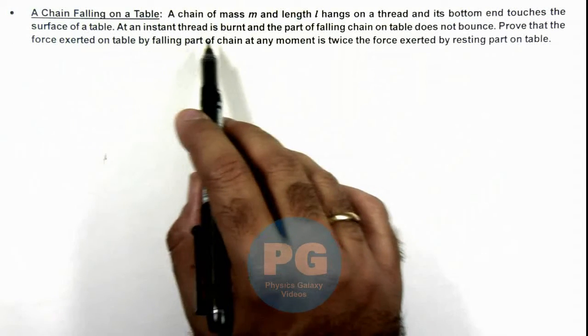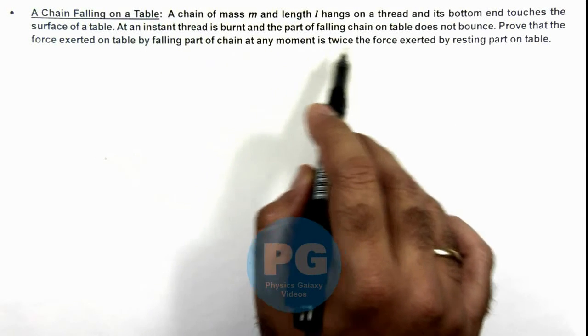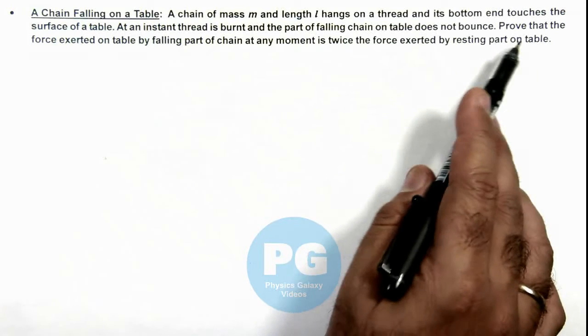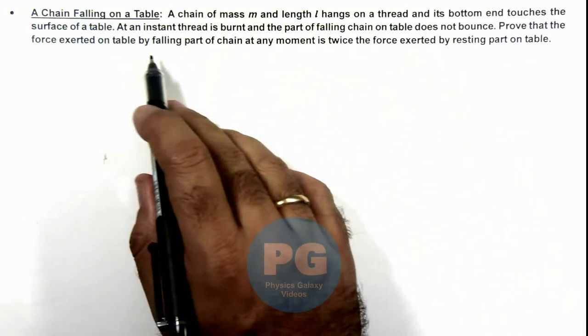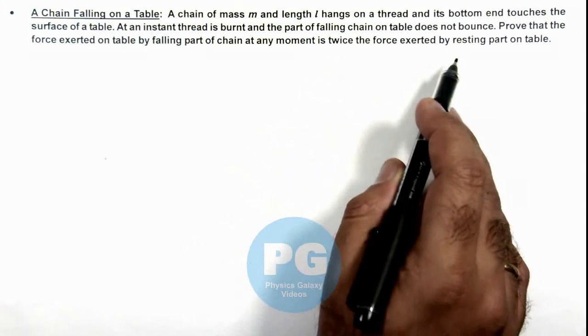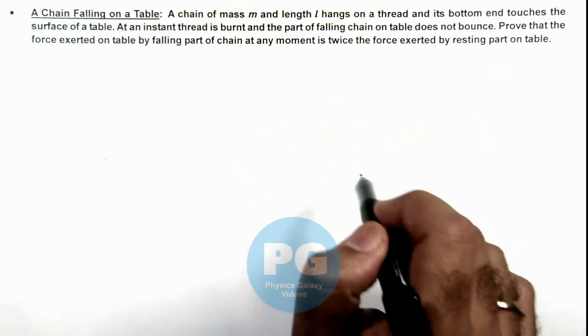At an instant the thread is burned and the part of falling chain on table does not bounce. We are required to prove that the force exerted on table by falling part of chain at any moment is twice the force exerted by resting part on the table.